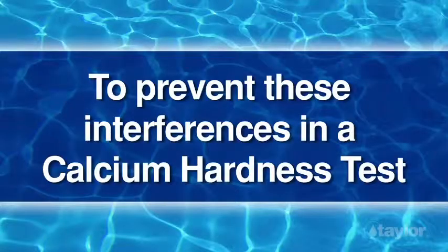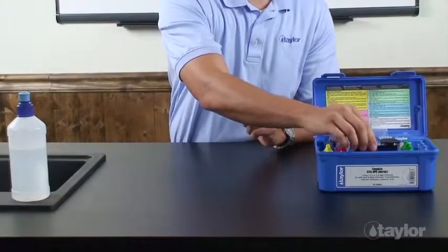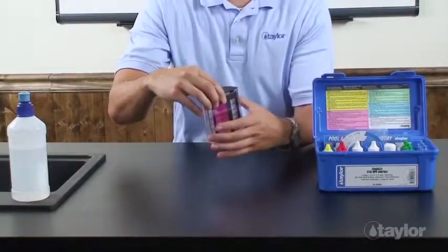To prevent these interferences in a calcium hardness test, add additional reagent 12 at the beginning of the test.